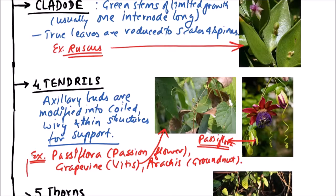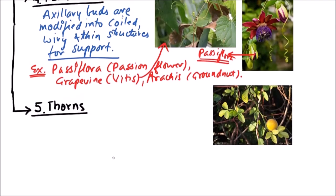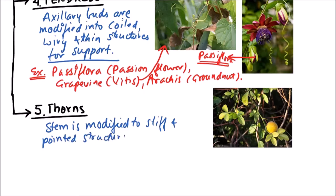Now the next is thorns. In some plants this stem is modified to stiff and pointed structures for protection.